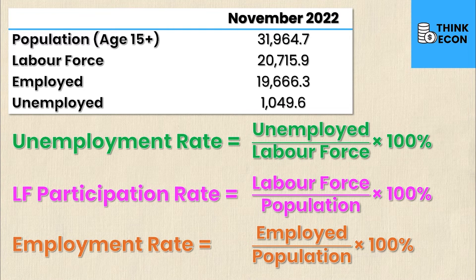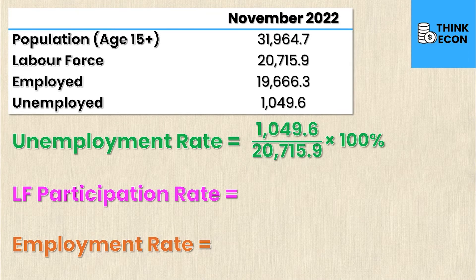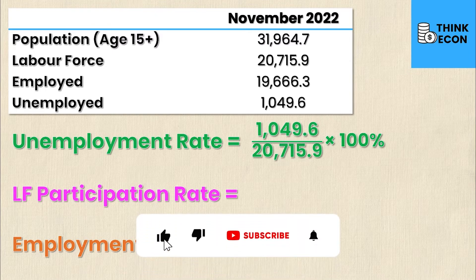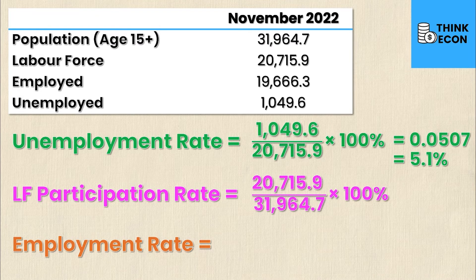For the unemployment rate, we have the total number of people unemployed — 1,049.6 (in thousands) — divided by the total labour force of 20,715.9. This gives a decimal value of 0.0507, and multiplying by 100% gives us 5.1%.